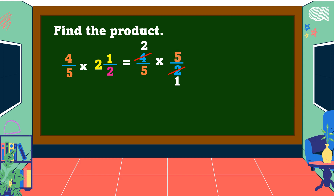Also, 5 and 5 have a common factor of 5: 5 divided by 5 is 1, and 5 divided by 5 is 1. Next, multiply both numerators and both denominators: 2 times 1 is 2, and 1 times 1 is 1. Lastly, reduce your answer to its lowest term if possible: 2 over 1 is equal to 2.